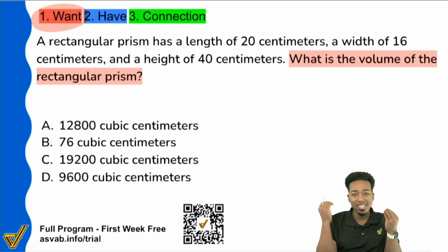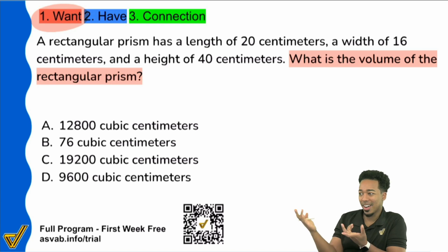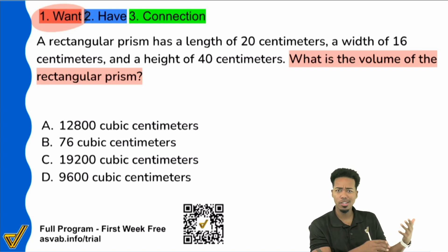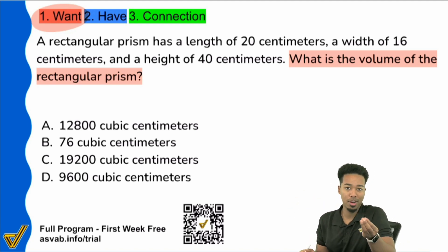So if they say find the volume of a rectangular prism, immediately your eyes and your brain need to say formula, there's a formula for that. When they say what's the area of the rectangle? There's a formula for that. What's the width if this is the perimeter? There's a formula for that. So that's the secret to geometry word problems.